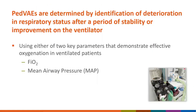PVAEs are determined by identification of deterioration in respiratory status after a period of stability or improvement, using two parameters: FiO2 and mean airway pressure, or MAP. High-frequency ventilation patients can be included in PVAE surveillance because the algorithm uses MAP instead of PEEP as a parameter.